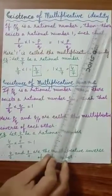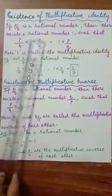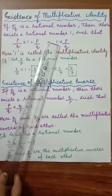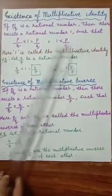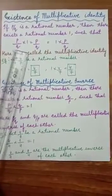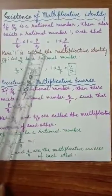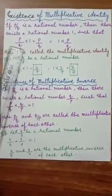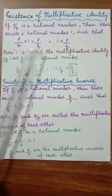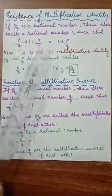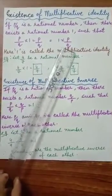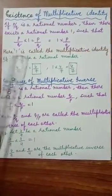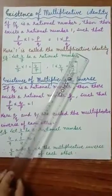Existence of multiplicative identity. If p by q is a rational number, then there exists a rational number 1 such that p by q into 1 equals p by q equals 1 into p by q. This means any rational number multiplied with 1 will give back the same rational number, and 1 multiplied with any rational number will also give back the same rational number. Here, 1 plays the role of multiplicative identity.